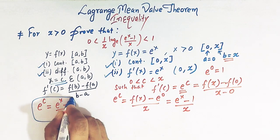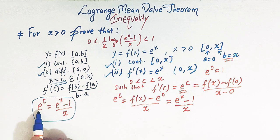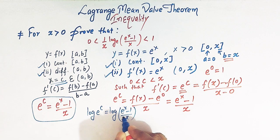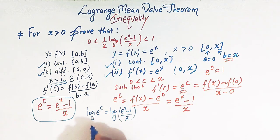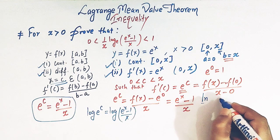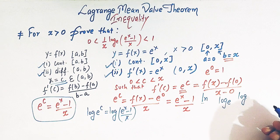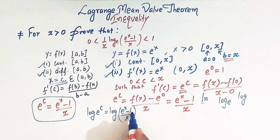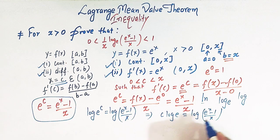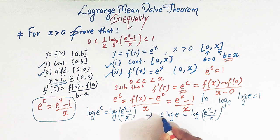We'll now utilize this expression to arrive at the required result. If we take the logarithm of both sides — here we are taking the natural log, base e — we get log(eᶜ) = log((eˣ - 1)/x). This gives c · log(e) = log((eˣ - 1)/x), and since log(e) = 1, we have c = log((eˣ - 1)/x).